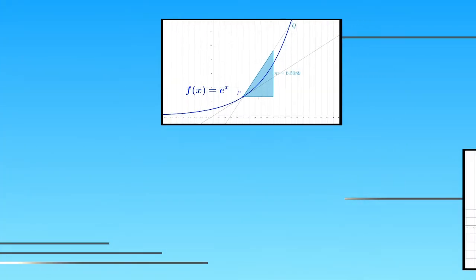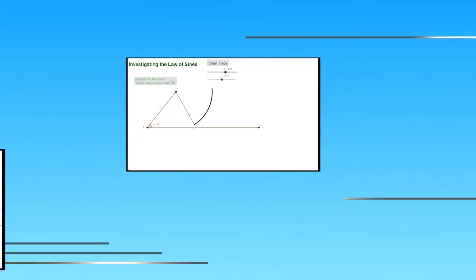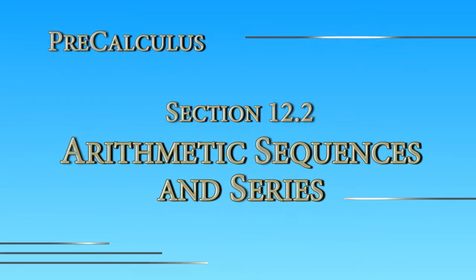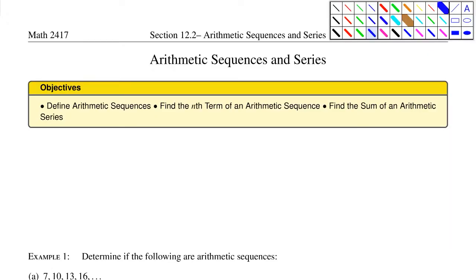In section 12.2, we'll look at arithmetic sequences and series. Arithmetic means linear, so these are sequences and series that come from having linear type terms.